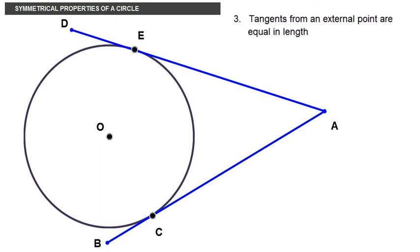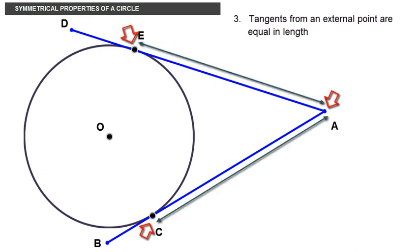The points C and E are where the tangents touch the circumference. This property states that the lengths of the tangents from the external point to the two points in the circumference of the circle are equal. That is AC and AE are equal.